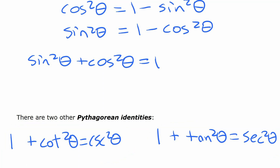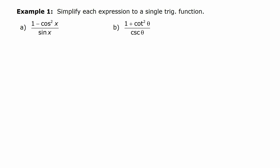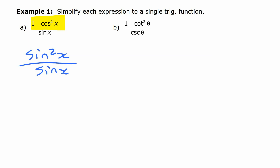Now we're going to look at using these identities to simplify some expressions. In this first example, one minus cos squared — we saw above that one minus cos squared equals sine squared — so we can change the top part to sine squared. Then we have sine on the bottom. Sine squared divided by sine, that's sine to the power of two over sine to the power of one, which just leaves sine of x as a single trig function.